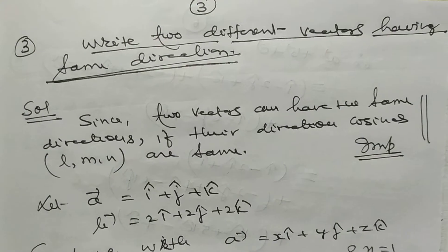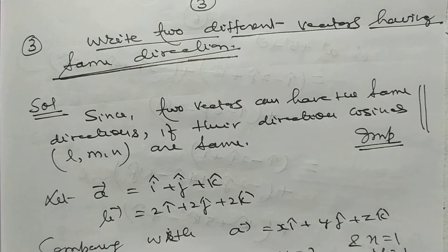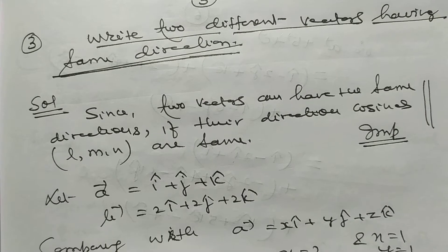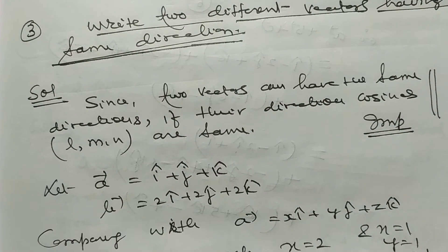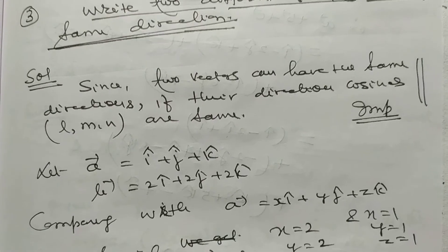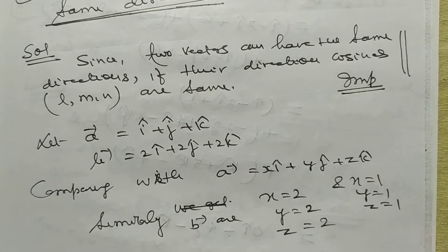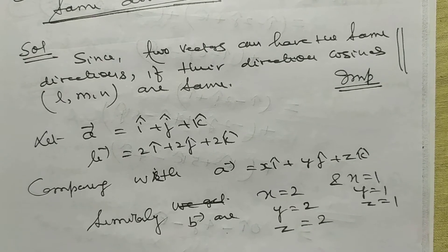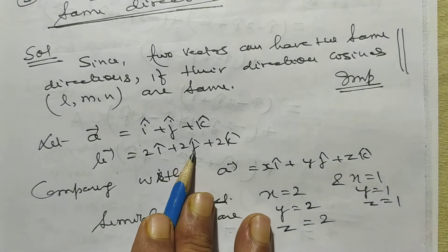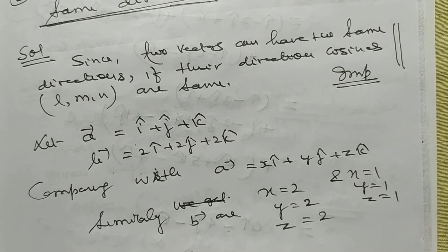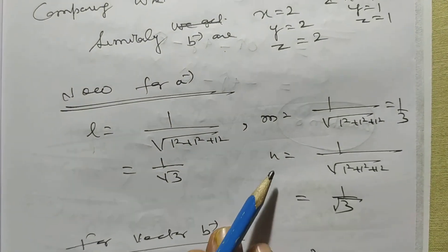Problem number 3: write two different vectors having the same direction. Two vectors can have the same direction if their direction cosines are the same. For example, vector a equals i + j + k, and vector b equals 2i-cap + 2j-cap + 2k-cap — b is proportional to a. For vector a, l = m = n = 1/√3.